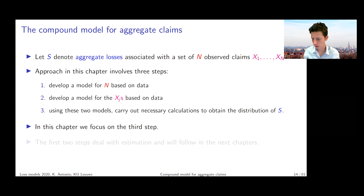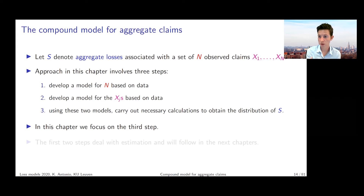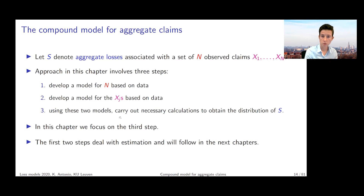Another strategy we're going to explain in this chapter is the Panjer recursion — the Panjer recursion we discussed for compound random variables, which uses a count distribution as the primary and another count distribution as the secondary distribution. We're going to revisit that Panjer recursion scheme so that we can use a severity distribution as the secondary distribution. The Panjer recursion will then offer a recursive scheme to get grip on the distribution of the total loss S. The first two steps in the three-step approach deal with estimation, which will be the subject of chapters that follow.